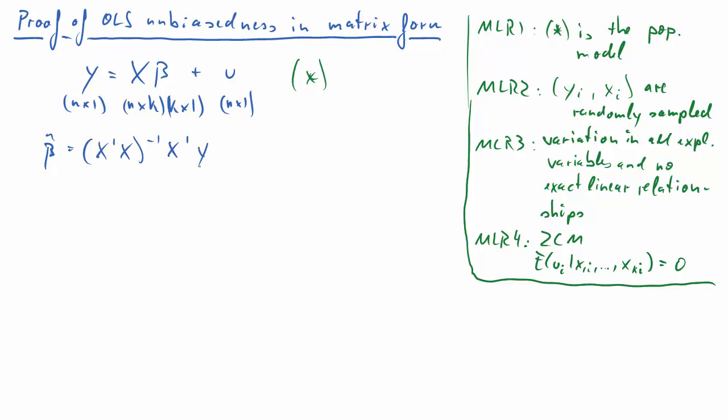You will remember that the OLS estimator for beta, beta hat is x prime x inverse x prime y. And we should note that this inversion will only work if our MLR3 is given.